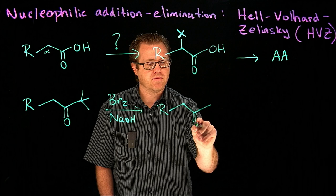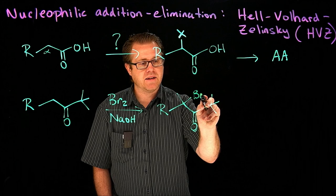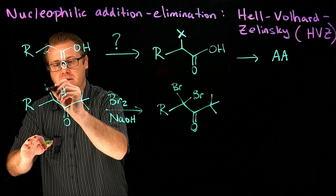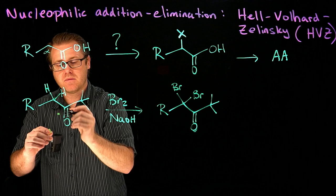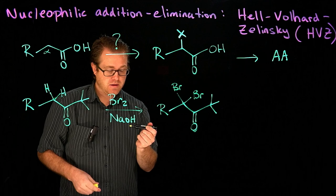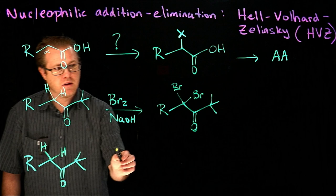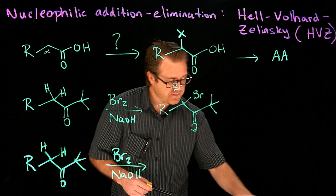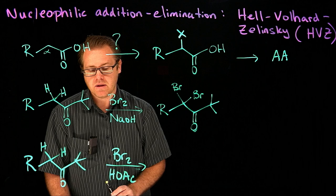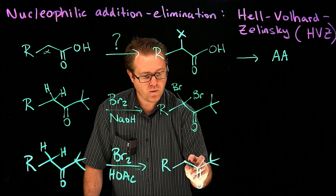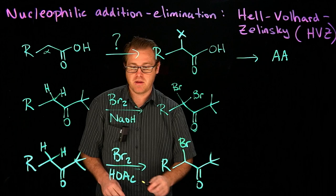We would generate a product that looks like this. Under basic conditions, you're going to replace all the alpha hydrogens with the halogen. But recall that if you did this under acidic conditions, things are a little bit different. If we take elemental bromine under acidic conditions — let's put in acetic acid — we recall that only one of the hydrogens will get replaced with a halogen.